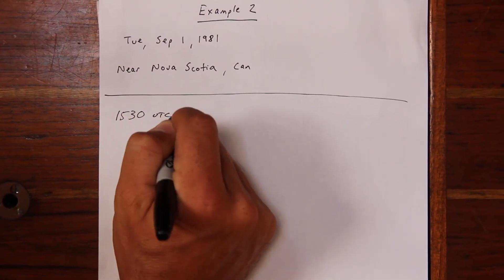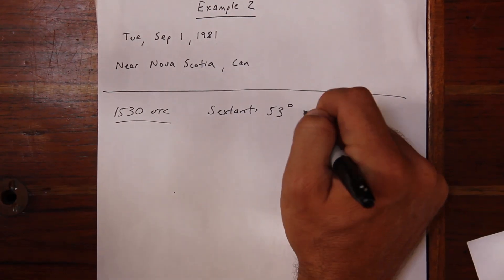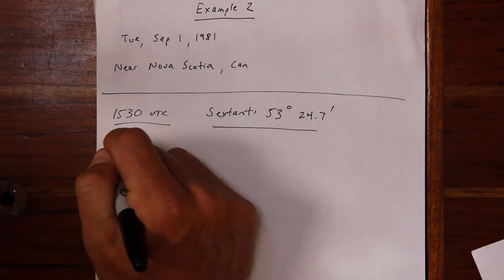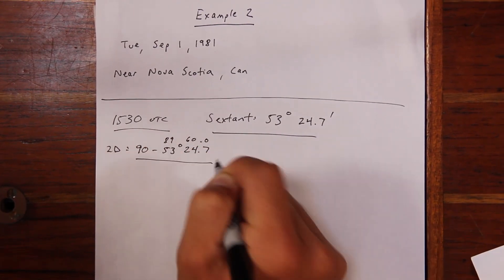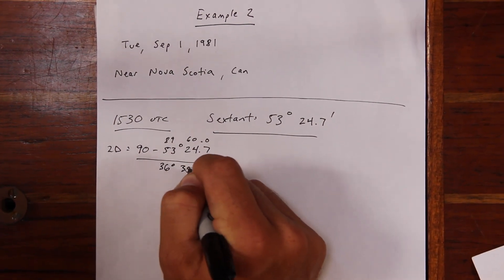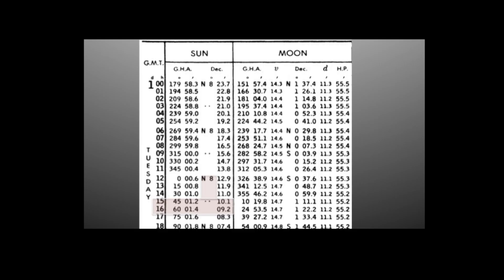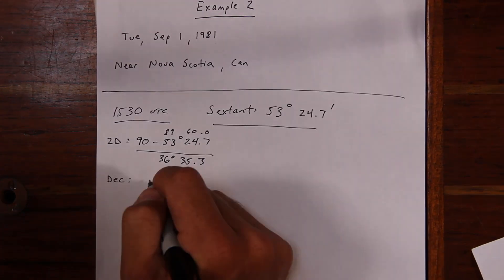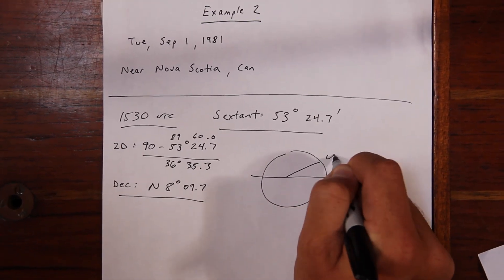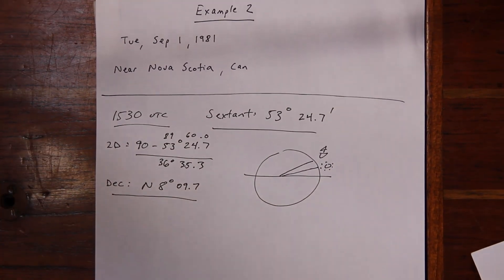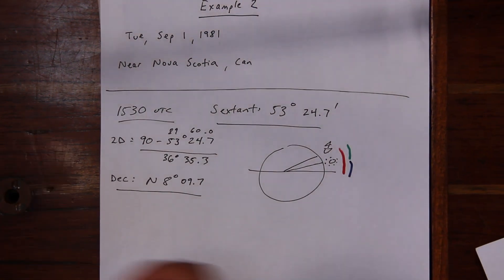In the second example problem, we're further north near Nova Scotia, Canada, and our time is 1530 UTC. Our sextant reads 53 degrees and 24.7 minutes. Zenith distance, using the 89 degrees 60 minutes trick, is 36 degrees and 35.3 minutes. Looking up our declination, we interpolate for the value between 1500 and 1600 UTC, giving us north 8 degrees and 9.7 minutes. Drawing our picture, we find the sun is in the same hemisphere but further south, so latitude equals zenith distance plus declination.